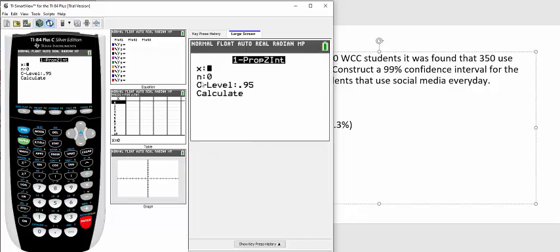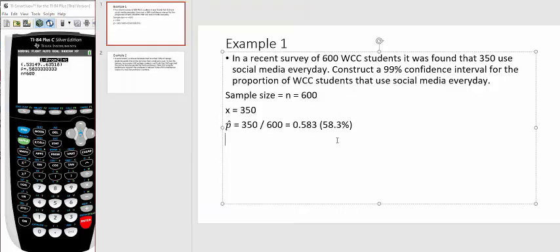X was the number of students who use social media every day, which is 350. N was the sample size, which was 600. Your calculator will always default to 0.95, so you have to be very careful. The problem asks for 99%, so I need to change that to 0.99. I'm going to scroll down, calculate, and go to three decimal places. My answer is 0.531 to 0.635.